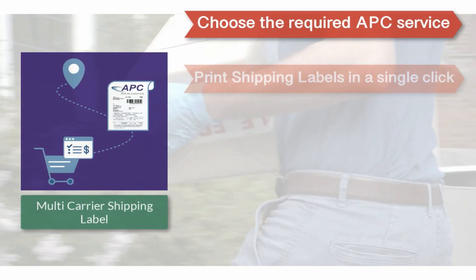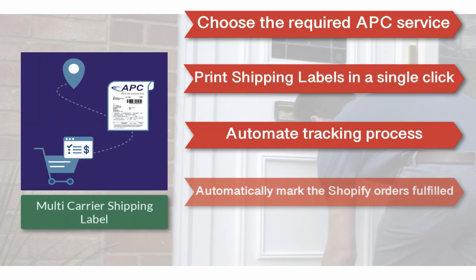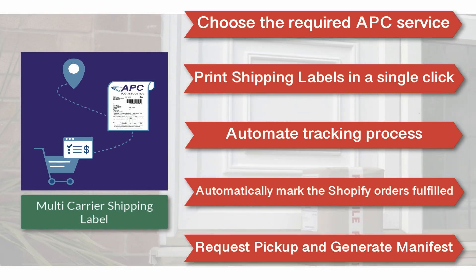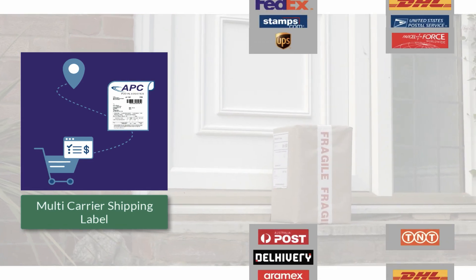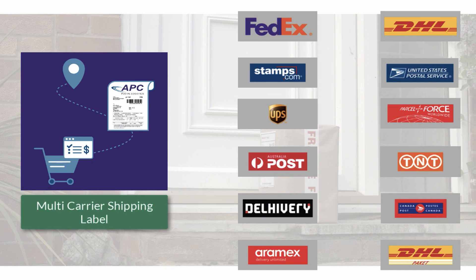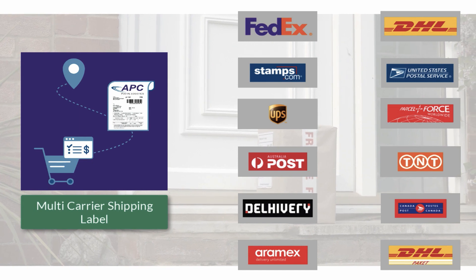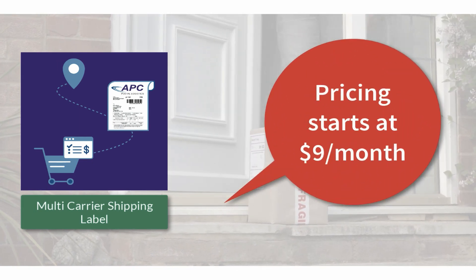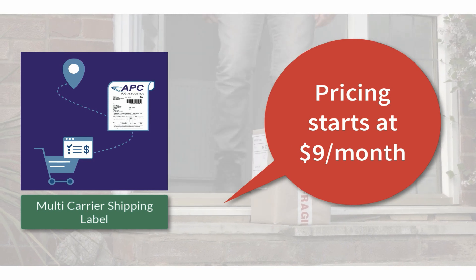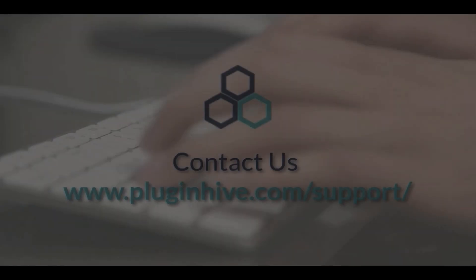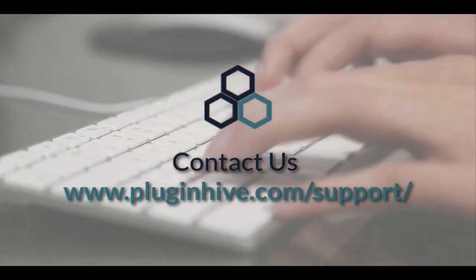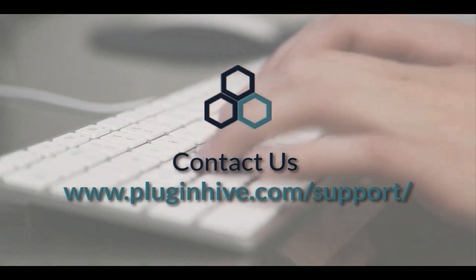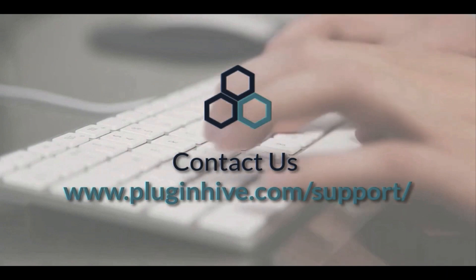With all these features, the Multi-Carrier Shipping Label app by PluginHive is the best shipping app for APC Postal Logistics. And there's more — the app integrates with many other top shipping carriers as well. The complete shipping solution for your Shopify store starts at $9 per month. If you have any queries or require assistance setting up the app, please reach out at PluginHive.com/support.